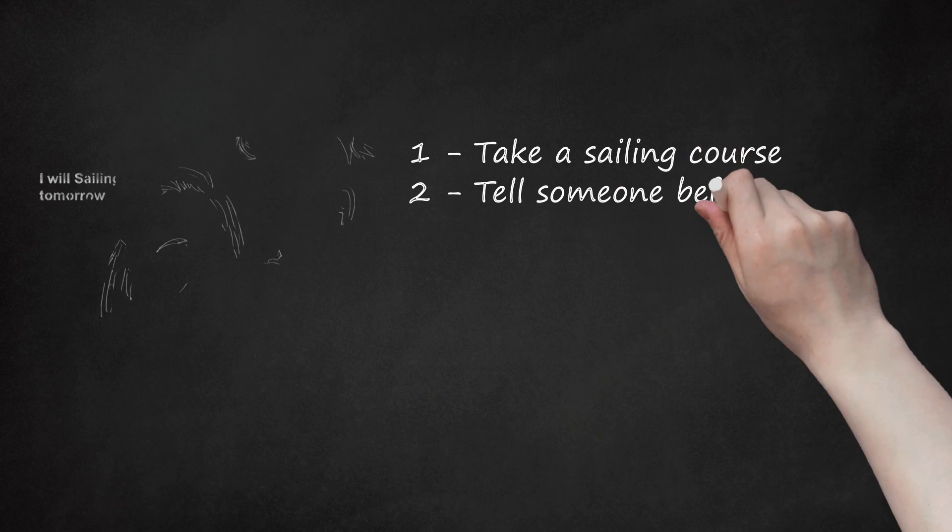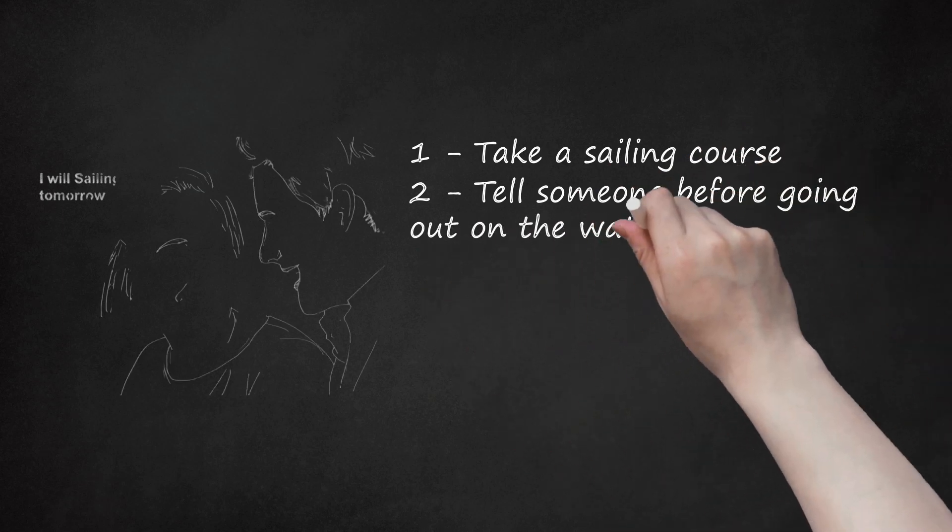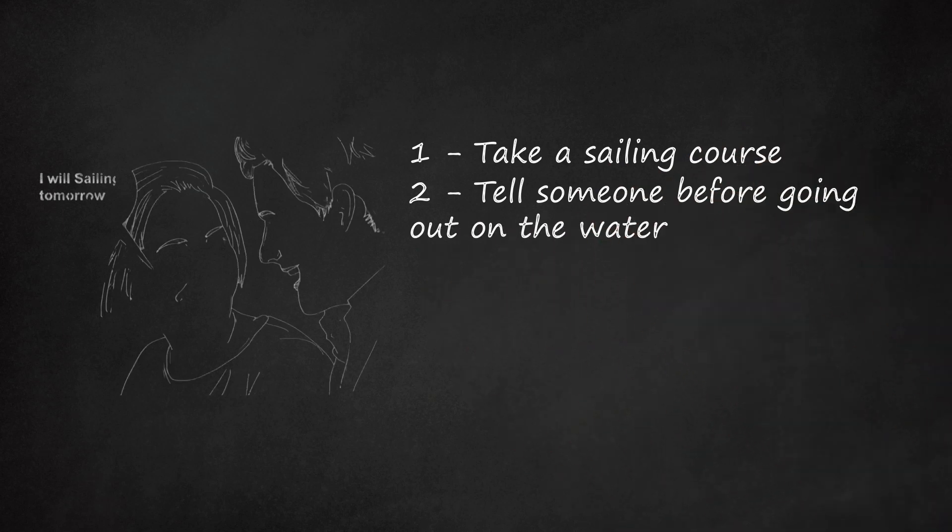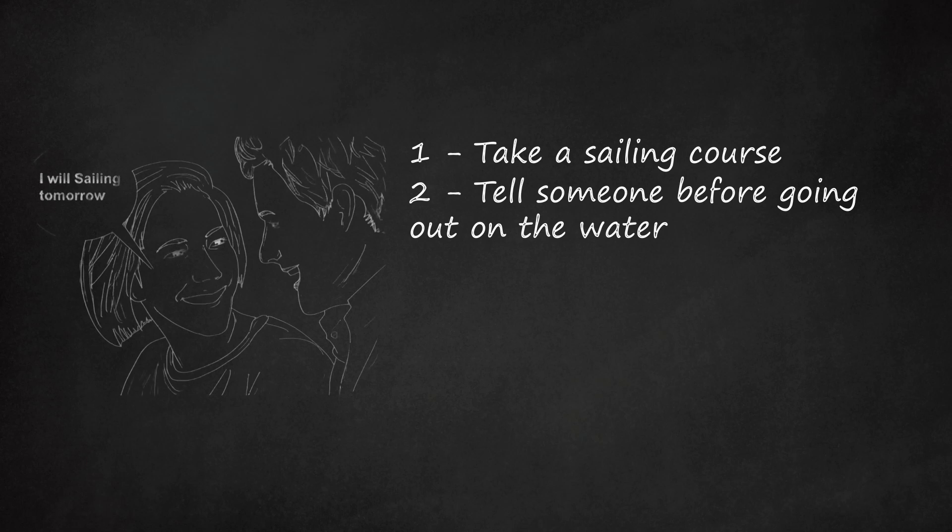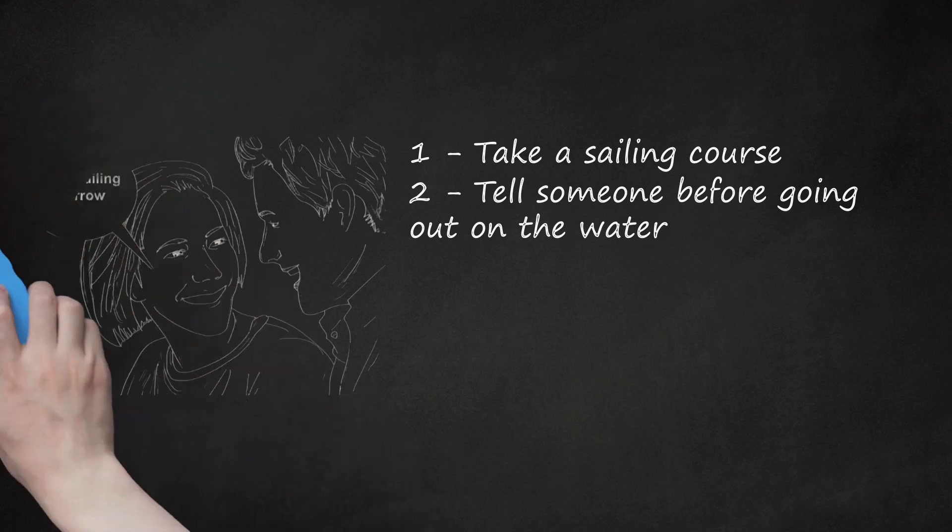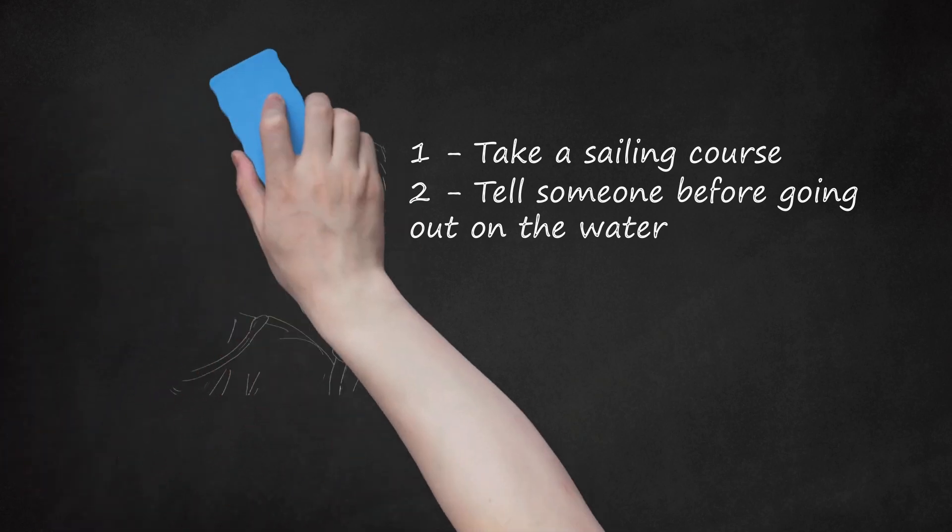Tell Someone Before Going Out on the Water. One of the most important parts of sailing is to notify the sailing club or another person of your whereabouts. Let them know the area you plan to sail in and when you plan to be back. This will give you and others peace of mind before you head out to the open water. Even if you are going to meet your sailing instructor, notify a third party of your plans.